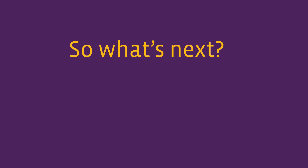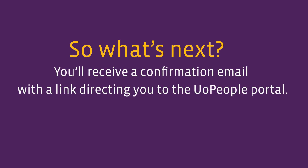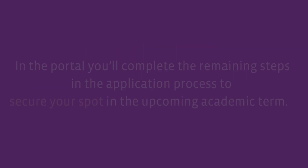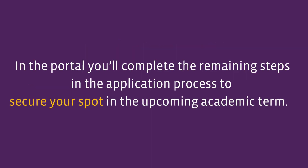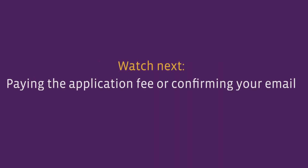So, what's next? You'll receive a confirmation email with the link directing you to the UO People portal. In the portal, you'll complete the remaining steps in the application process to secure your spot in the upcoming academic term. Check out more videos about how to complete your application process — watch next: paying the application fee or confirming your email.